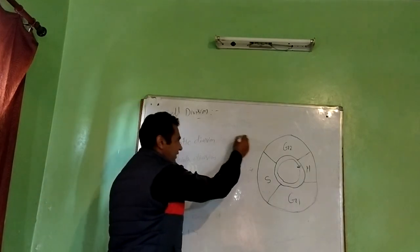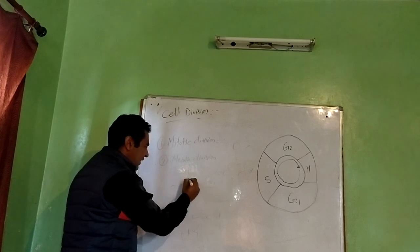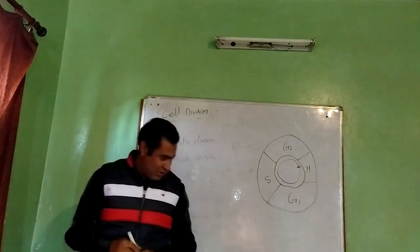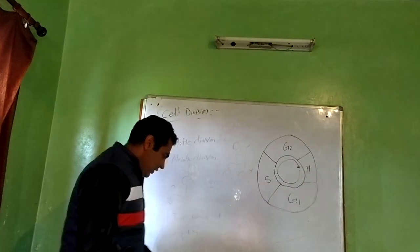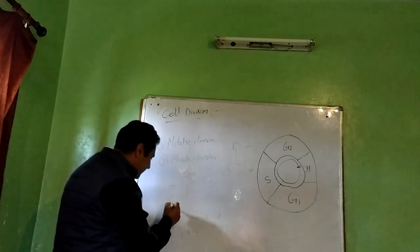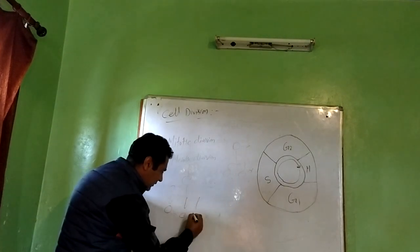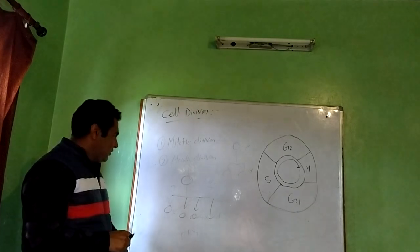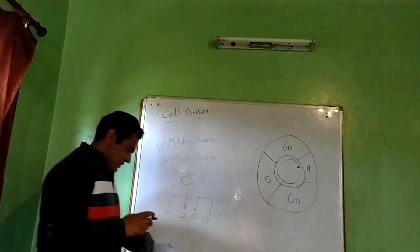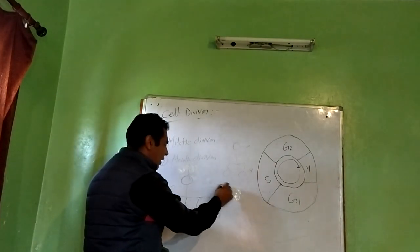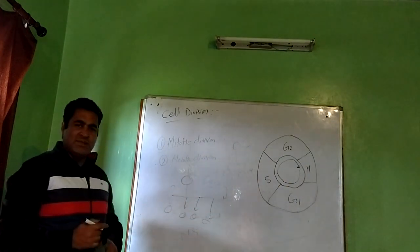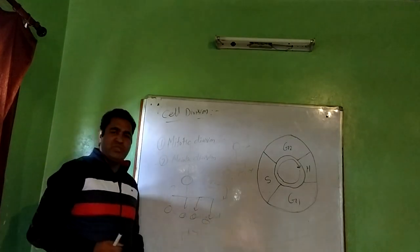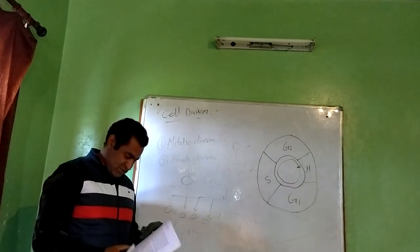Meiotic division is responsible for sexual reproduction. In sexually reproducing organisms, a cell divides into four cells, so the DNA content is reduced. There are two consecutive divisions. We will talk about meiosis in a separate lecture. These are the two divisions operational in multicellular organisms.